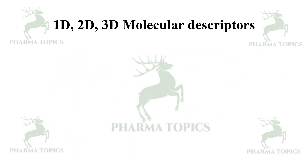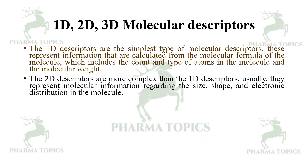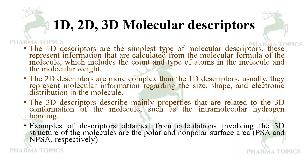1D descriptors are the simplest type, calculated from the molecular formula — including the count and type of atoms and molecular weight. 2D descriptors are more complex and represent molecular information regarding size, shape, and electronic distribution. 3D descriptors describe properties related to the 3D conformation of the molecule, such as intramolecular hydrogen bonding, polar surface area (PSA), and non-polar surface area (NPSA).